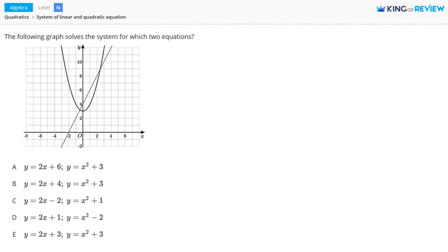Let's first look at the line. One method for writing the equation of a line is slope-intercept form. This is y equals mx plus b, where m is the slope and b is the y-intercept.